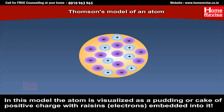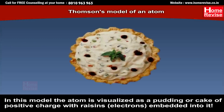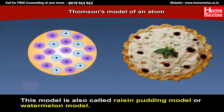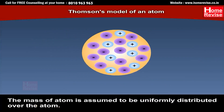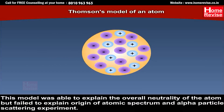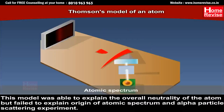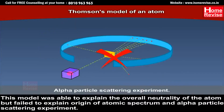The electrons are embedded into it uniformly so as to give the most stable electrostatic arrangement. In this model, the atom is visualized as a pudding or cake of positive charge with raisins — i.e. electrons — embedded into it. This model is also called the Raisin Pudding Model or Watermelon Model. The mass of the atom is assumed to be uniformly distributed over the atom. This model was able to explain the overall neutrality of the atom, but failed to explain the origin of atomic spectrum and the alpha particle scattering experiment.